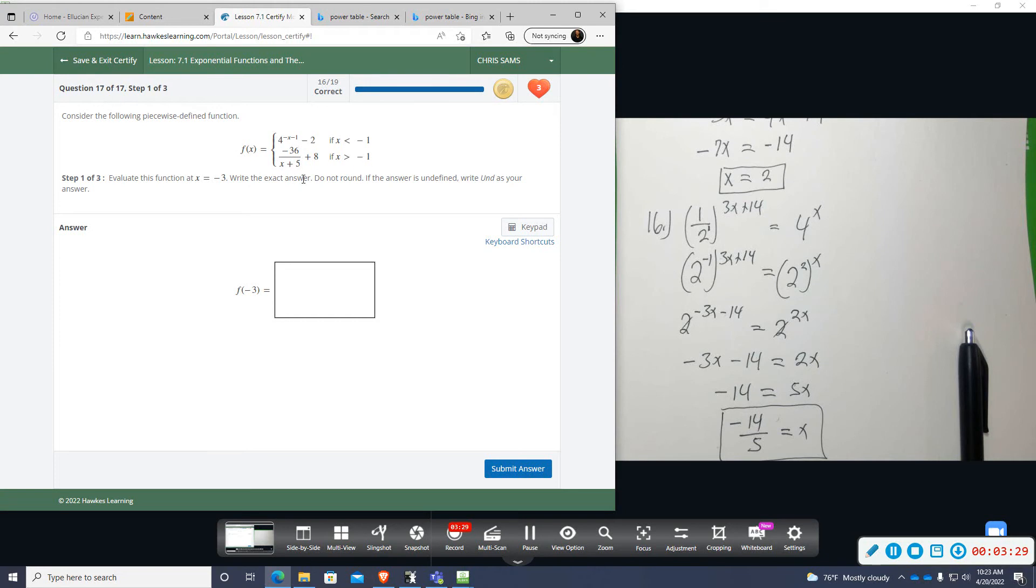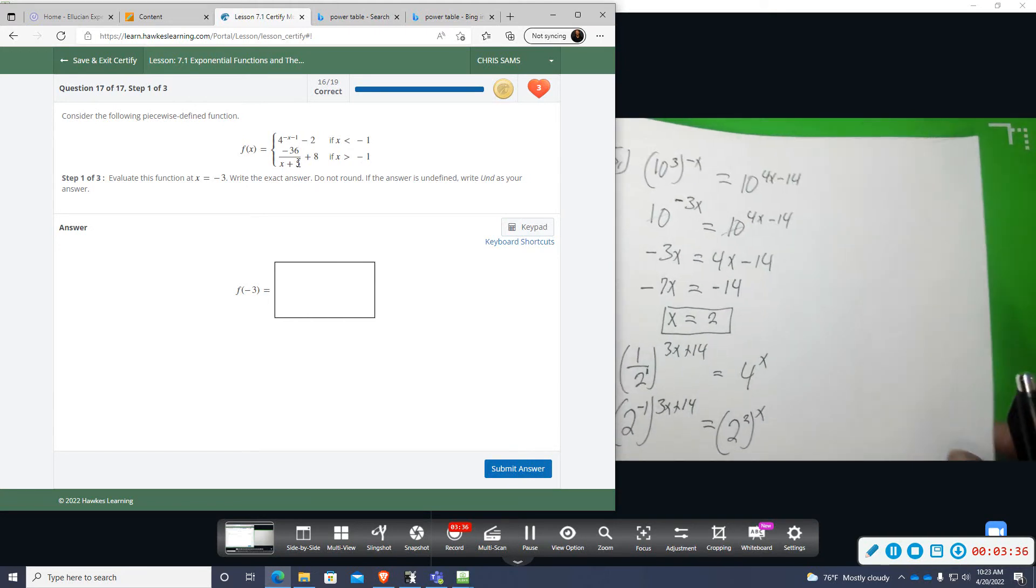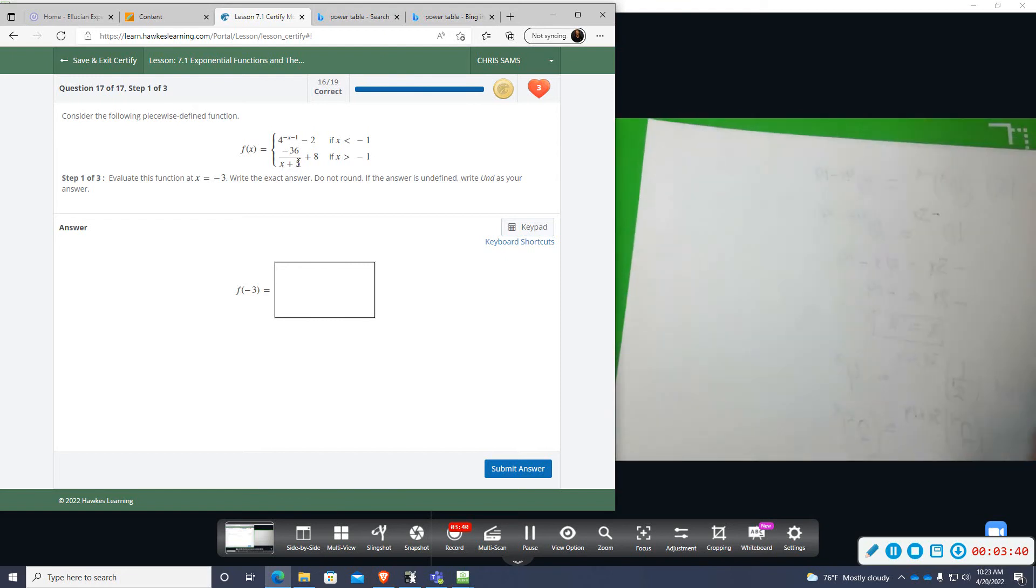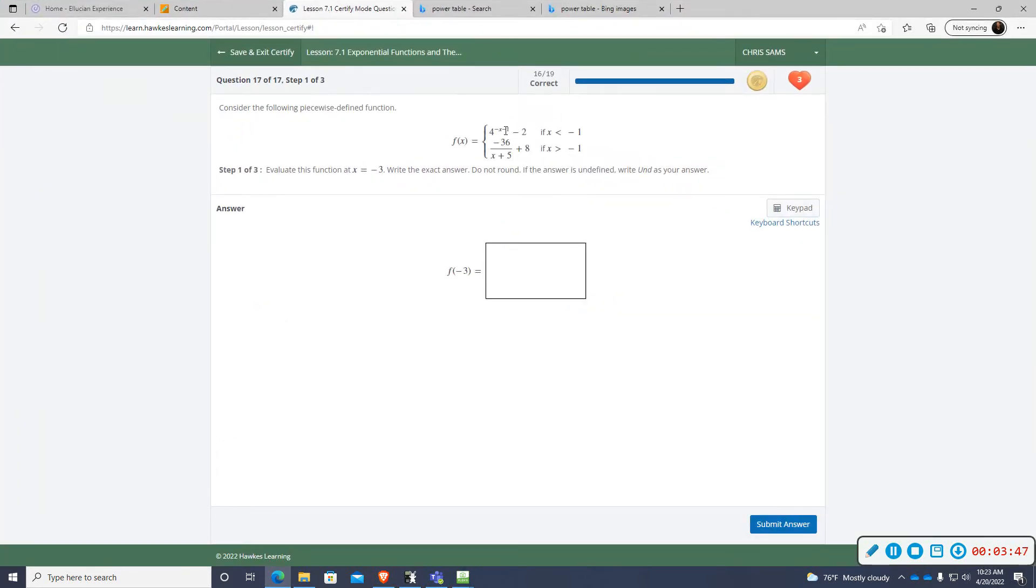Number 17. So this is a piecewise function and we haven't seen one on the notes. I think we are going to just do this with the calculator. You have one equation up here that only works if x is less than negative 1, so that means negative 2 and below. And then this bottom equation only works if x is greater than negative 1, so that would be 0, positive 1 as far as whole numbers and on up.